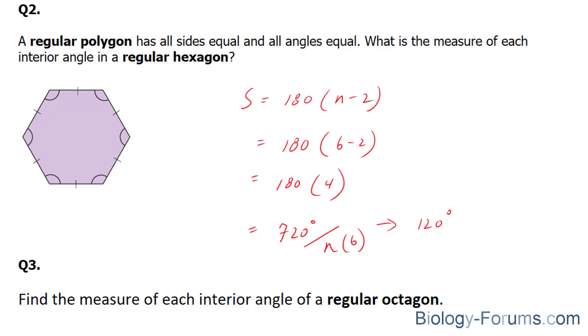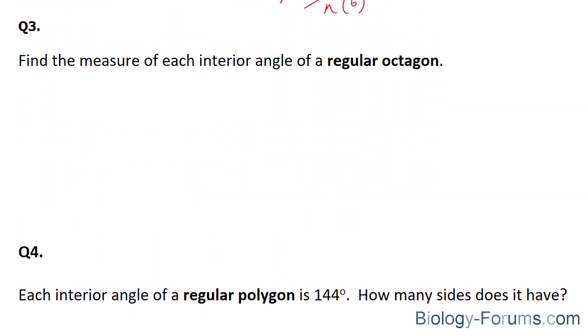Let's move on to question number three. In question number three, they want us to find the measure of each interior angle of a regular octagon. So once again, an octagon is eight sides. So we'll use S is equal to 8 minus 2 times 180.